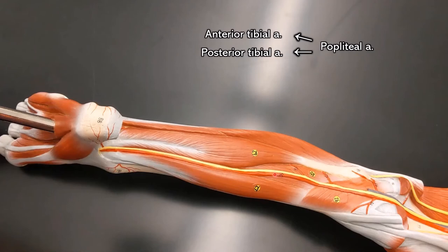The posterior tibial artery has this branch coming off of it, which is the fibular artery, because that is pointing laterally towards your fibula. As it continues on to the bottom of your foot, it's going to turn into the medial and lateral plantar arches, which you can learn more about if you look at my foot video.